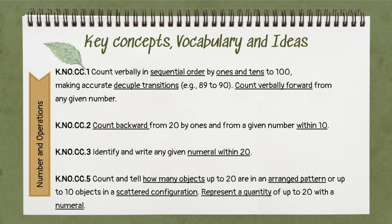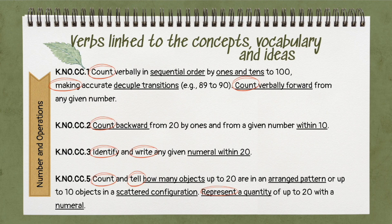So let's unpack these standards. First, I'm going to underline the key concepts, vocabulary, and ideas — these are the skills learners need to be able to do within each standard. I've underlined: sequential order, ones and tens, decade transitions, count verbally forward, count backward within 10, numeral within 20, how many objects, an arranged pattern, scattered configuration, and represent a quantity as a numeral. Once I've identified key concepts, vocabulary, and ideas, we can then look at the specific verbs — I've circled all of the verbs within the concepts. These are the verbs for how learners are going to show the concepts, vocabulary, and ideas — the actions that they're going to take.